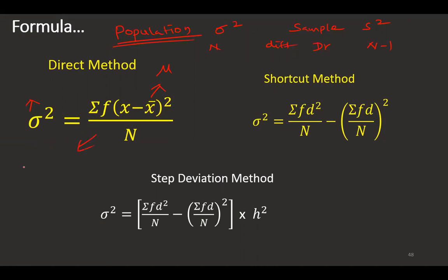This is the formula. Originally I will write: sigma f into (x minus mu) squared divided by n. We will be writing it as sigma f(x minus x bar) squared. When n is in the denominator, take it as a population and denote it by sigma square. When n minus one, I will write it as s square. One more point: in the step deviation method, multiply with h square. Previously for mean, median, mode, we multiply only with h, but here remember to multiply by h square.